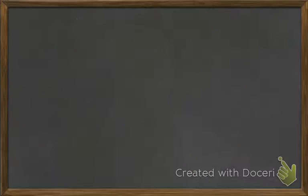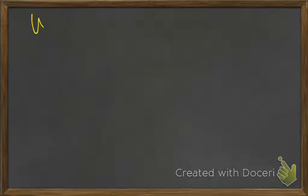Let's go work it out. Which of these are you going to start with? In the PowerPoint they take everything rearranged and put it into a final equation. You can do that, or do multiple solving steps. What are we going to solve for first? Net work equals negative one-half M VI squared.